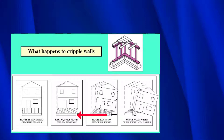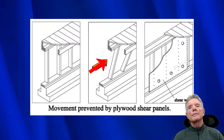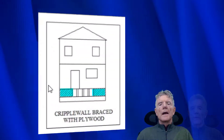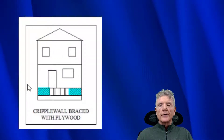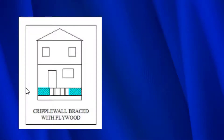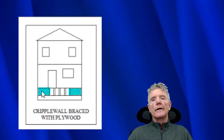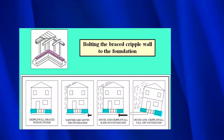Plywood is what prevents cripple walls from collapsing. As you can see, as the earthquake force tries to cause the cripple wall to collapse, we just put plywood on it to prevent that from happening. As you can see in this house, we have plywood on this end and plywood over here. Notice we don't have to put plywood along the entire cripple wall — the engineering calculations behind FEMA P-1100 tell us exactly how much plywood we need, and we'll go into that in another video.